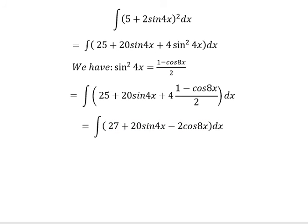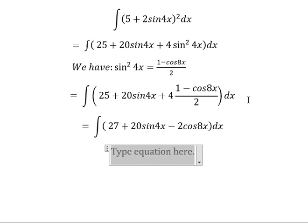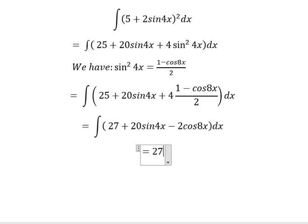Now we can get the final answer. The integral of twenty-seven, you got about 27x. The integral of sin 4x, you will got about 20 cos 4x.